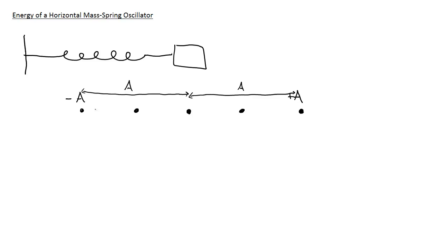In this example, we're going to take a look at the energies that are involved. If you think about what's happening with the spring when it's oscillating back and forth, the energies we have are kinetic energy and spring potential energy. We don't have any gravitational potential energy because this is a horizontal oscillator, so we don't have any change in height or gravitational potential energy.